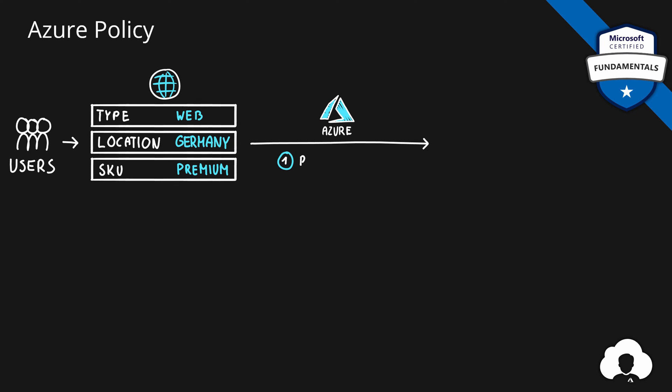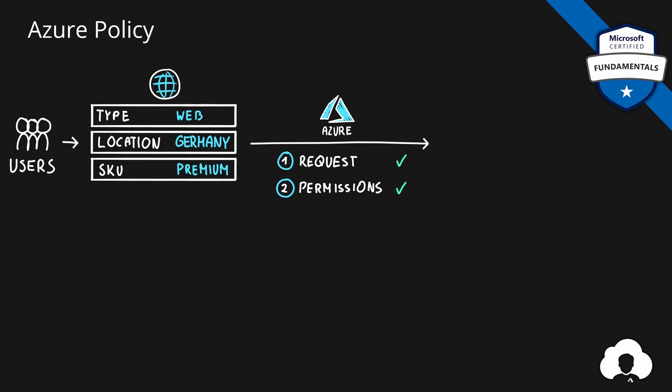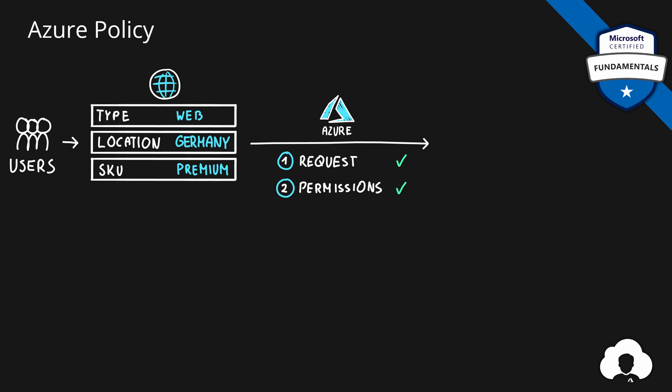What Azure does first is validating this request. So Azure will check whether this service is a proper service, whether we filled all the required properties, is the combination of the properties correct, is the service available in this region, and many other things. And once the request is validated, the next thing that is being checked are permissions. So Azure will check whether the user that submitted the request has all the permissions required to create this service. And if it does, it creates the service. But there's one more thing Azure does before creating that service, which is checking for policies.